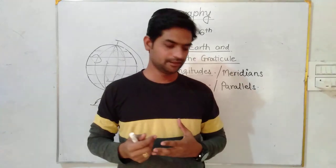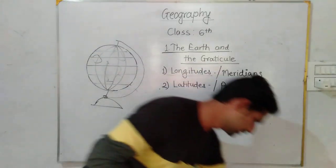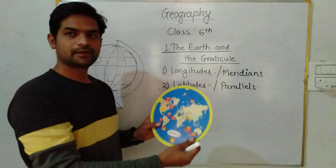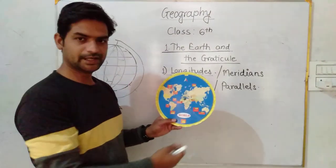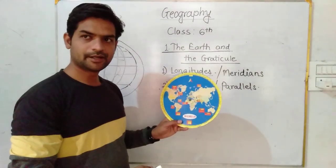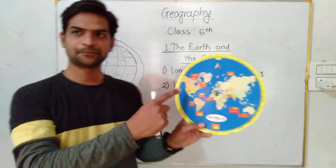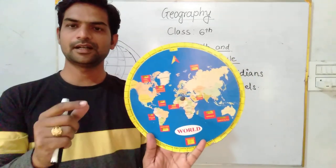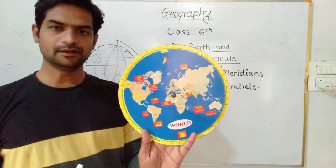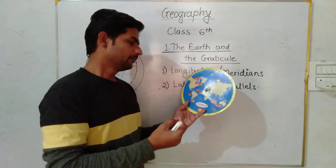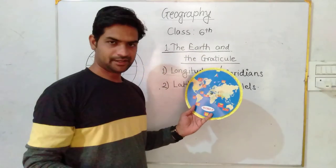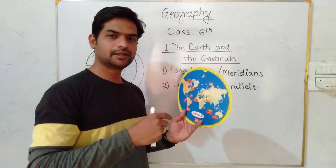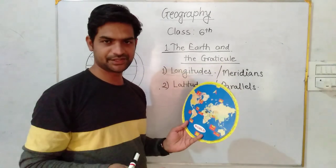We all know that there are 7 continents on the Earth. This is the map of Earth and in this map you can see different types of continents. There are total 7 continents on the Earth. We are connected with different countries, and connecting to different countries is called globalization.